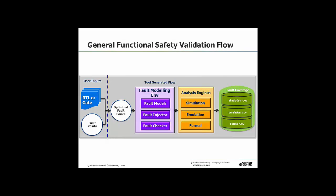This is a high-level view of what a functional safety validation flow may look like. On the far left we have our design — RTL or gate — with a number of fault points. We go through an optimisation phase, taking the list of possible fault points and refining it. Then there's a modelling step: we introduce fault models, decide what sort of fault to model, then inject them and check the fault evaluation through the system. Engines could be simulation, emulation, or formal. Finally, on the far right, we measure coverage metrics and merge them if using multiple solutions.